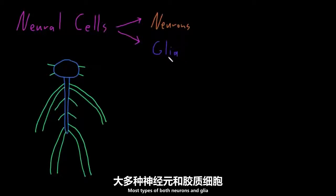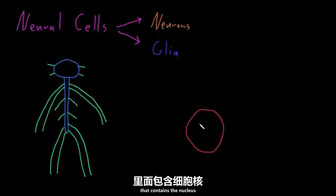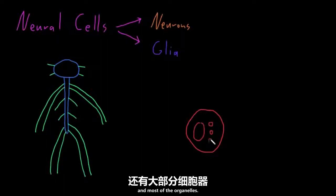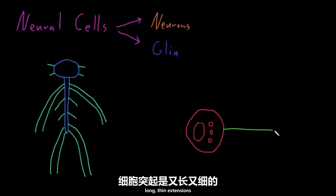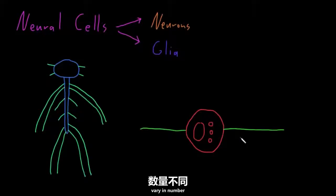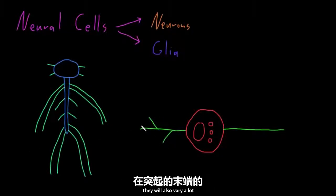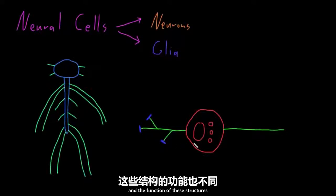Most types of both neurons and glia share some structural features. Most have a main part called the soma, or cell body, that contains the nucleus and most of the organelles. Coming out of the soma, most of these cell types have processes — long, thin extensions. The processes of different neural cells vary in number, length, thickness, and degree of branching, as well as in the terminal structures at the end of their processes and their function.